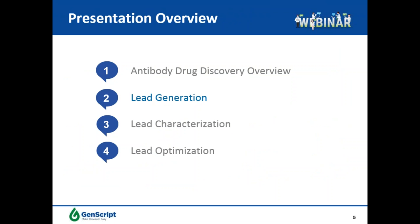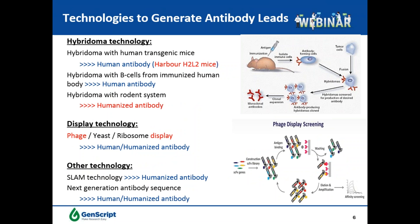There are several technologies to generate therapeutic antibody leads. The hybridoma approach with human transgenic mice or B cells from immunized humans can directly generate human antibodies. We have collaborated with HarbourBio to use H2L2 mice for fully human antibody generation. The major limitation of using transgenic animals is that these technologies are very limited and the cost is extremely high. The most popular approach is still the hybridoma approach with a rodent system, where you get rodent antibodies and then perform humanization. Phage or yeast display is also an option, and we also have this capability.